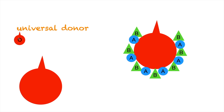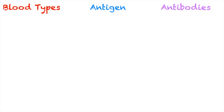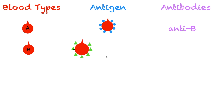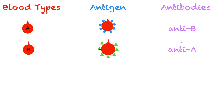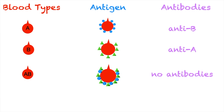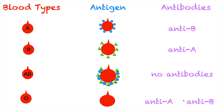The way to remember this: O for zero antigens, O for universal donor — they're both O's. Let's review: Type A blood has A antigens on the red blood cell surface and anti-B antibodies. Type B blood has B antigens on the red blood cell surface and anti-A antibodies. Type AB blood has both A and B antigens and no antibodies in the plasma. Type O blood has no antigens on the surface but has anti-A and anti-B antibodies. Always the opposite: A antigen → anti-B; B antigen → anti-A; A and B antigens → no antibodies; zero antigens → anti-A and anti-B antibodies.